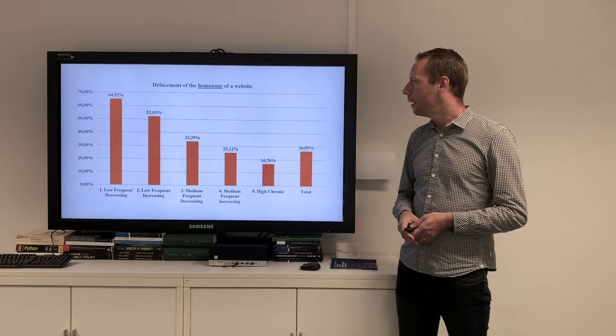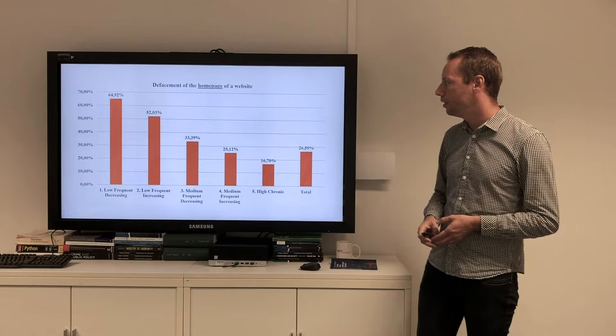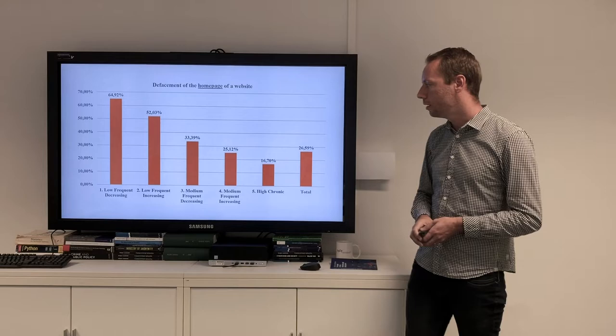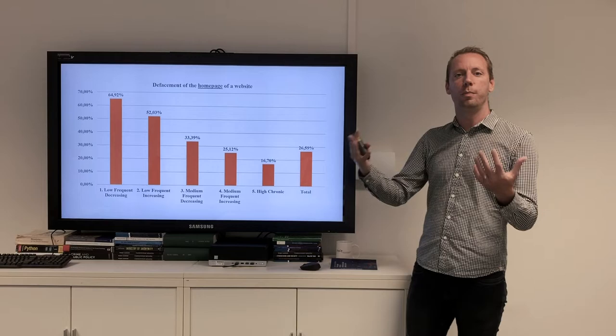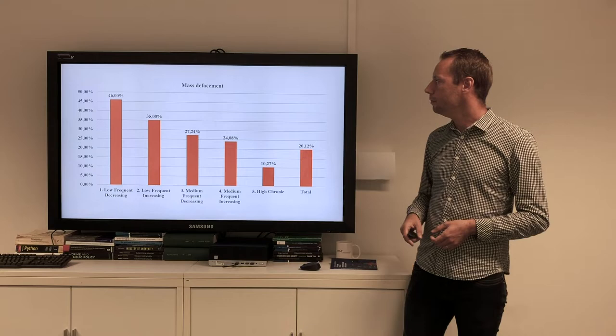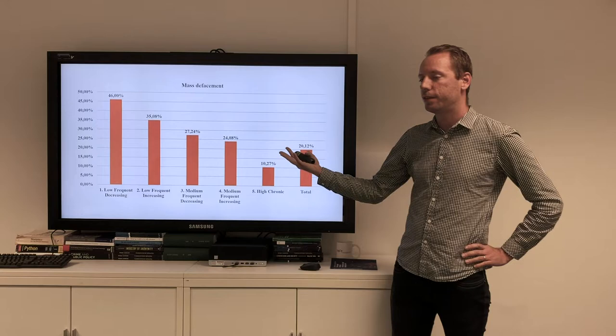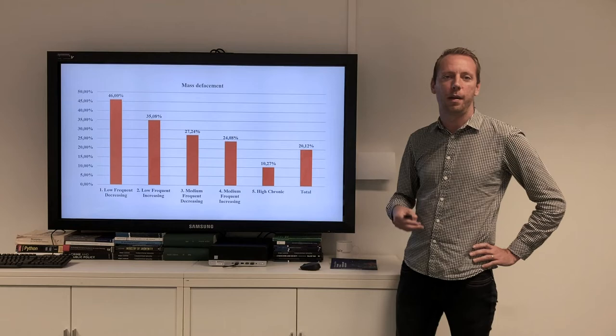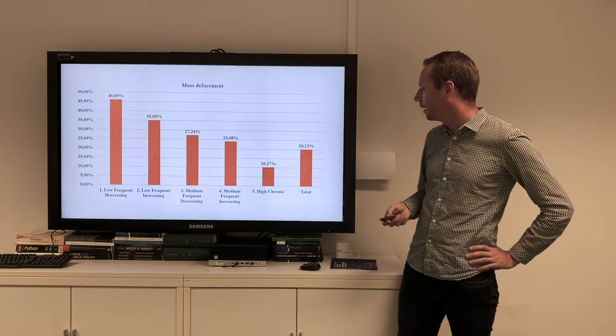Then we looked at the characteristics of the websites that they attack. Do they attack a homepage of a website or a secondary page? We see that the more active the group is, the less often they attack the homepage. Especially the low-frequent defacers, they are the ones who most often attack the homepage, which probably gets more attention than when you just attack a secondary page. The high-chronics only 16% of the time attack the homepage. For mass defacements, it's a similar picture. The low-frequent groups are most likely to use a mass defacement, while the high-chronics are most often using multiple single defacements.